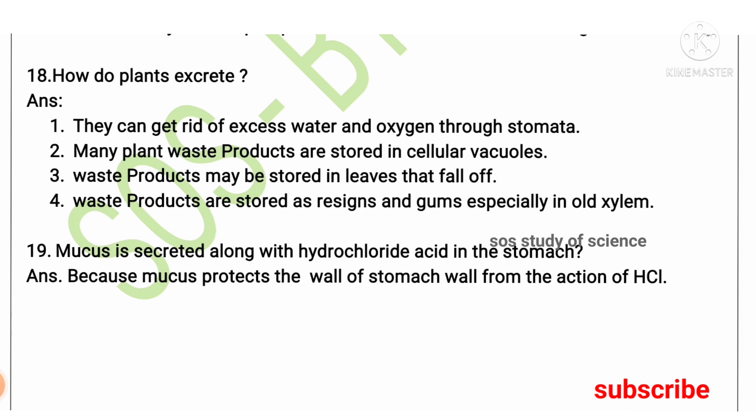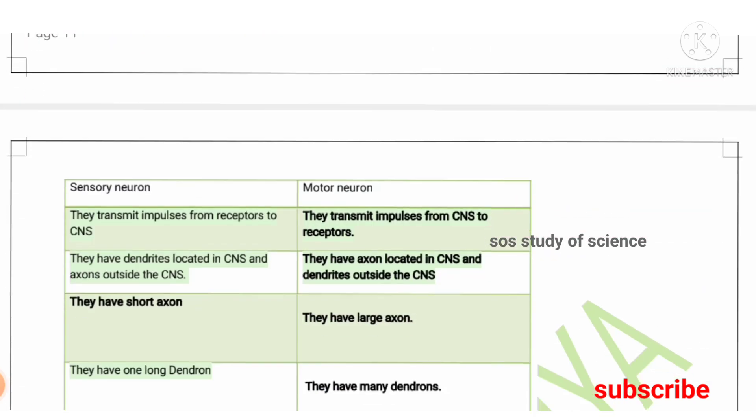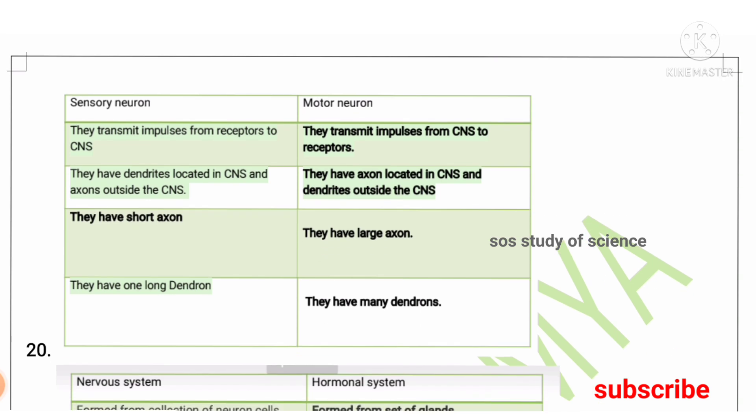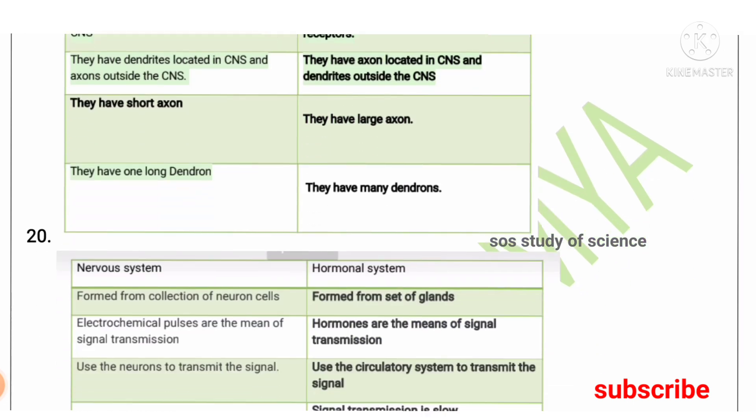You also need to know some important differentiations. Sensory neurons transmit impulses from receptors to the central nervous system; motor neurons transmit impulses from the central nervous system to the effectors. Sensory neurons have dendrites in the central nervous system and axons outside; motor neurons have axons in the CNS and dendrites outside. Sensory neurons have a short axon and one long dendron; motor neurons have a longer axon and many dendrons.